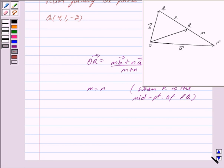Then the position vector of the point R is given by vector OR equals vector A plus vector B upon 2, because M becomes equal to N which is equal to 1. So we get vector OR equals vector A plus vector B upon 2. This is the key idea behind our question.